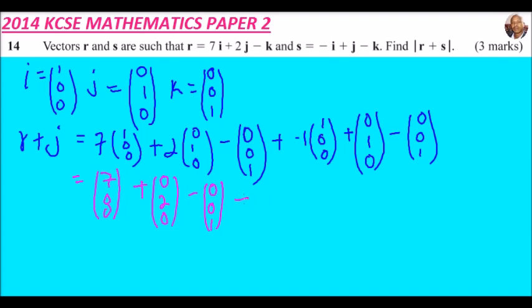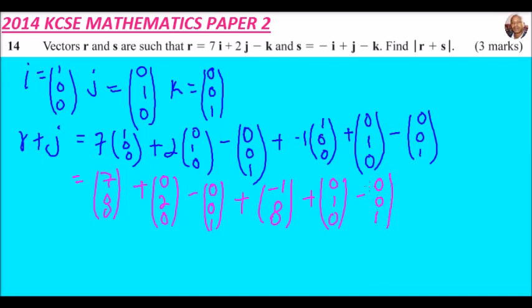For s, opening the brackets gives: (-1, 0, 0), then plus (0, 1, 0), and finally minus (0, 0, 1).